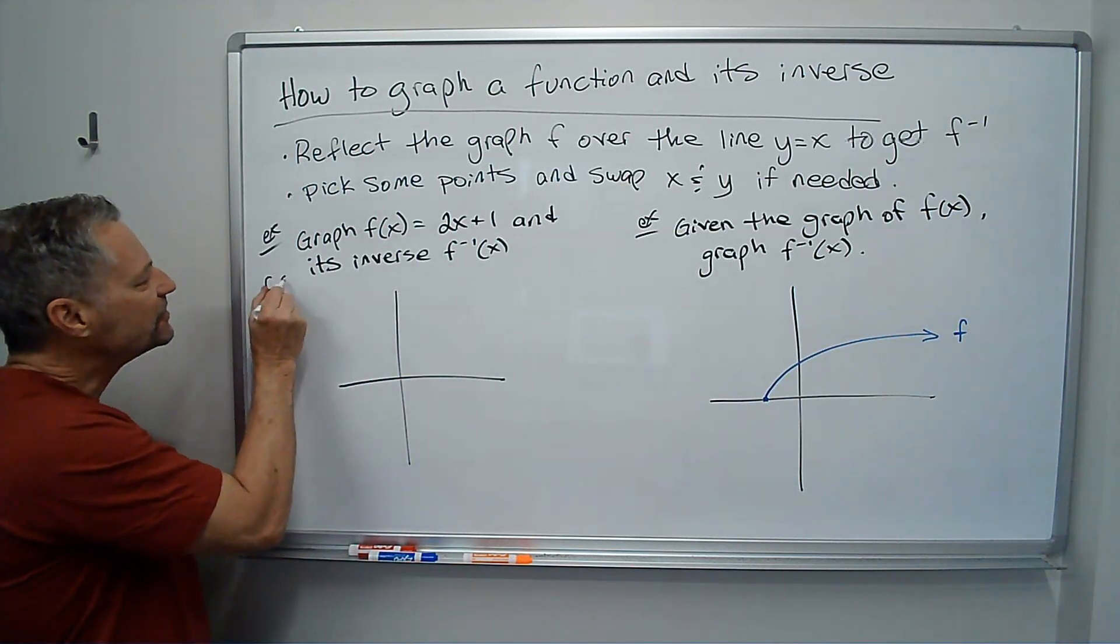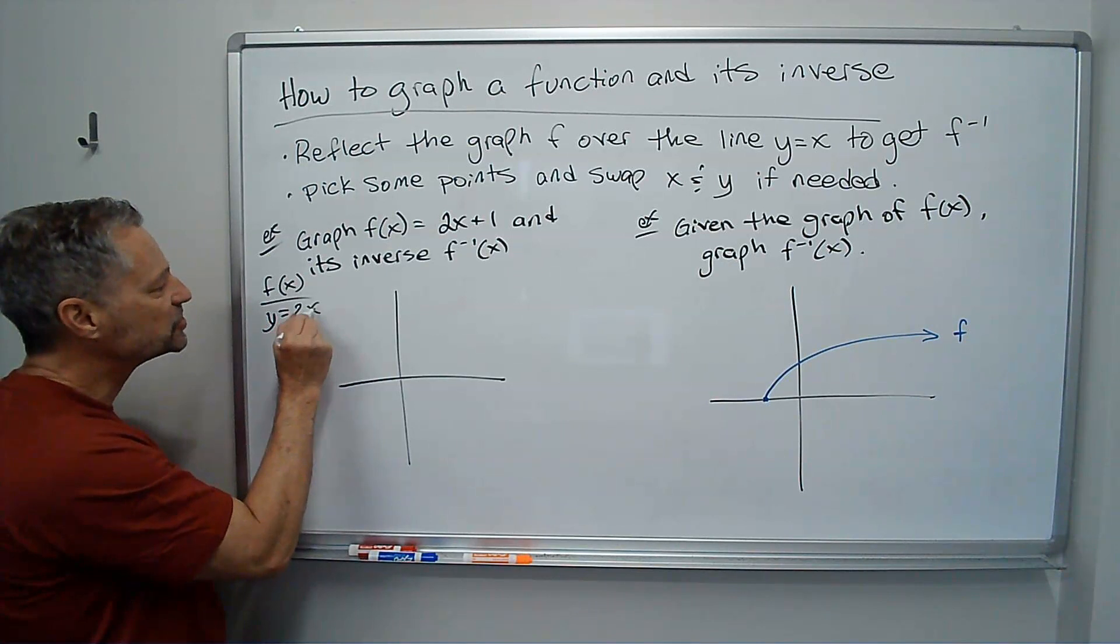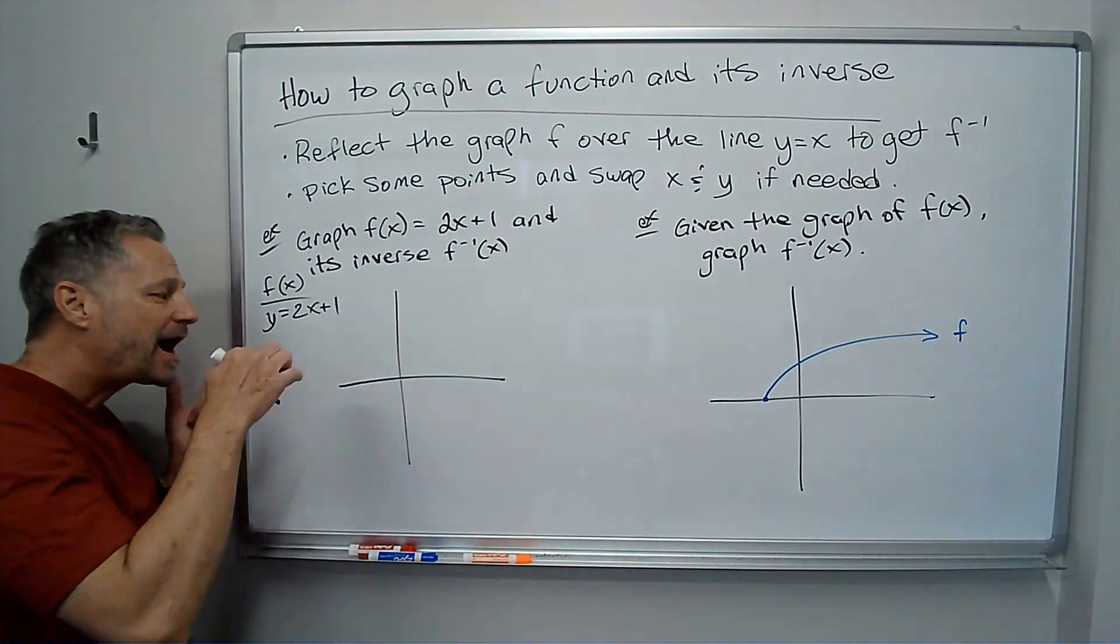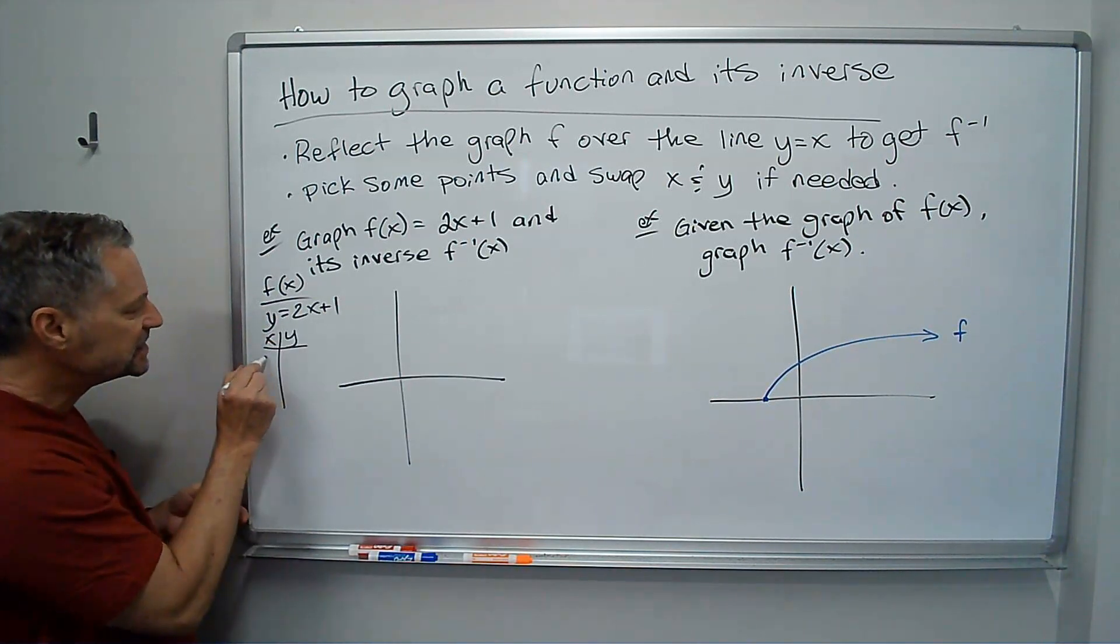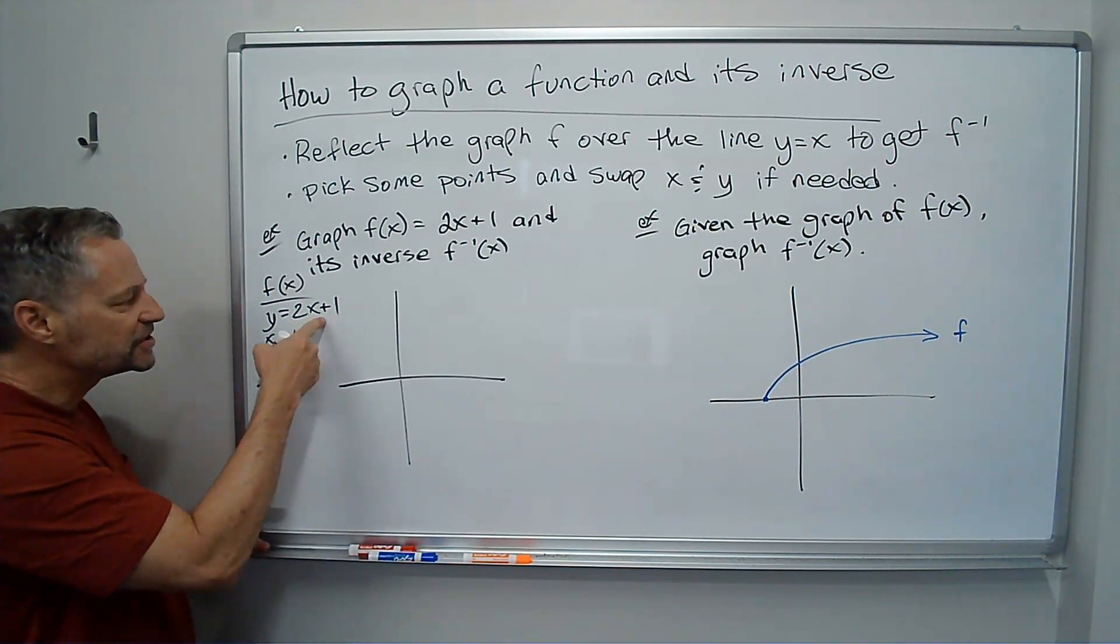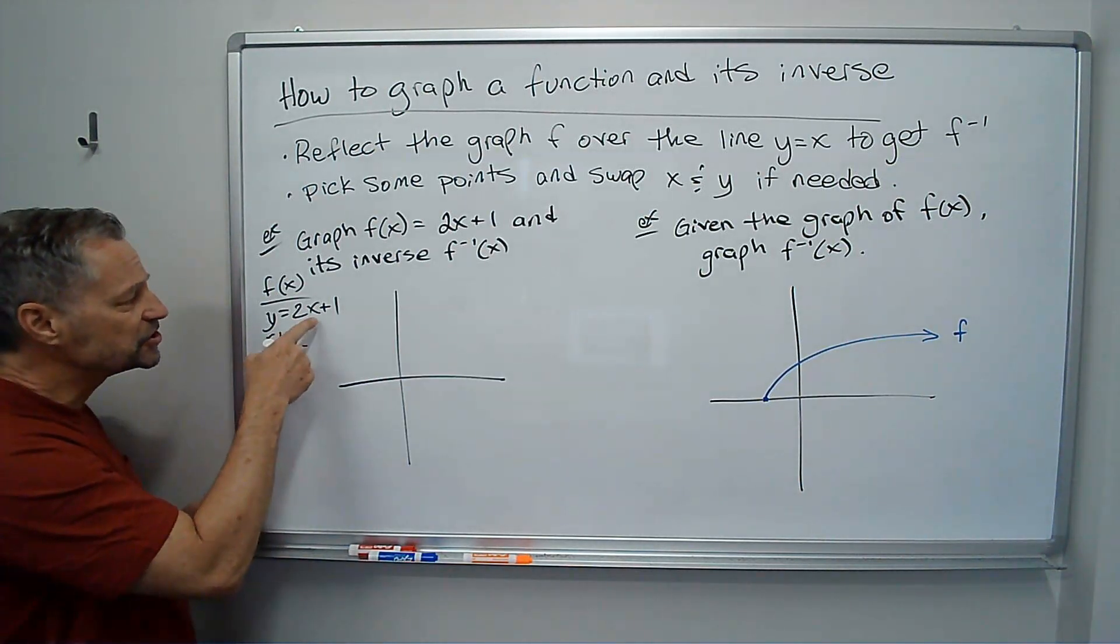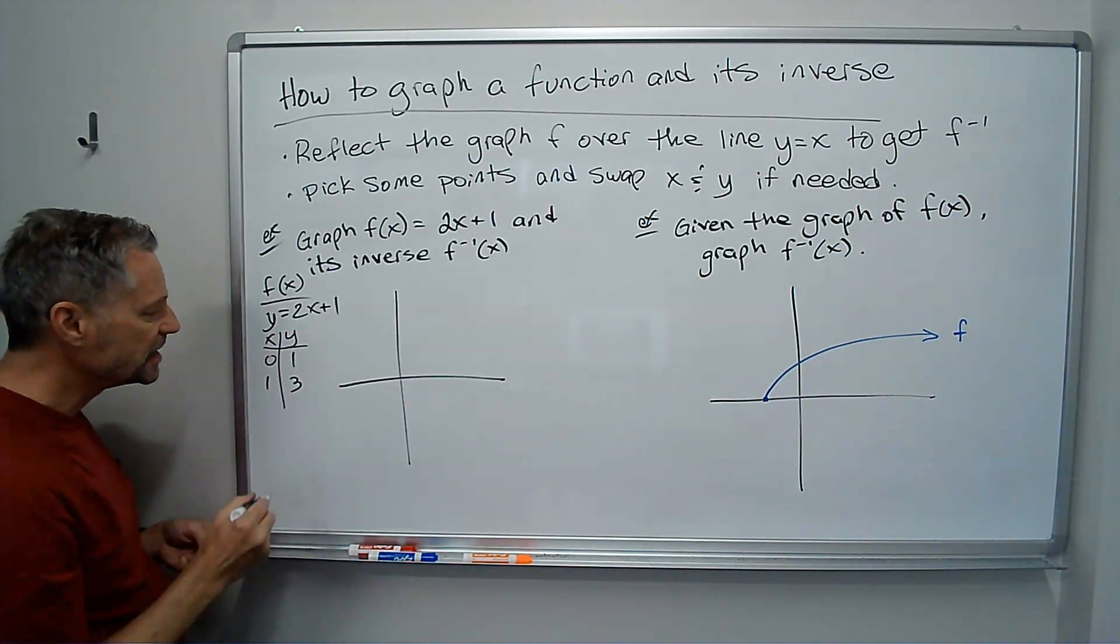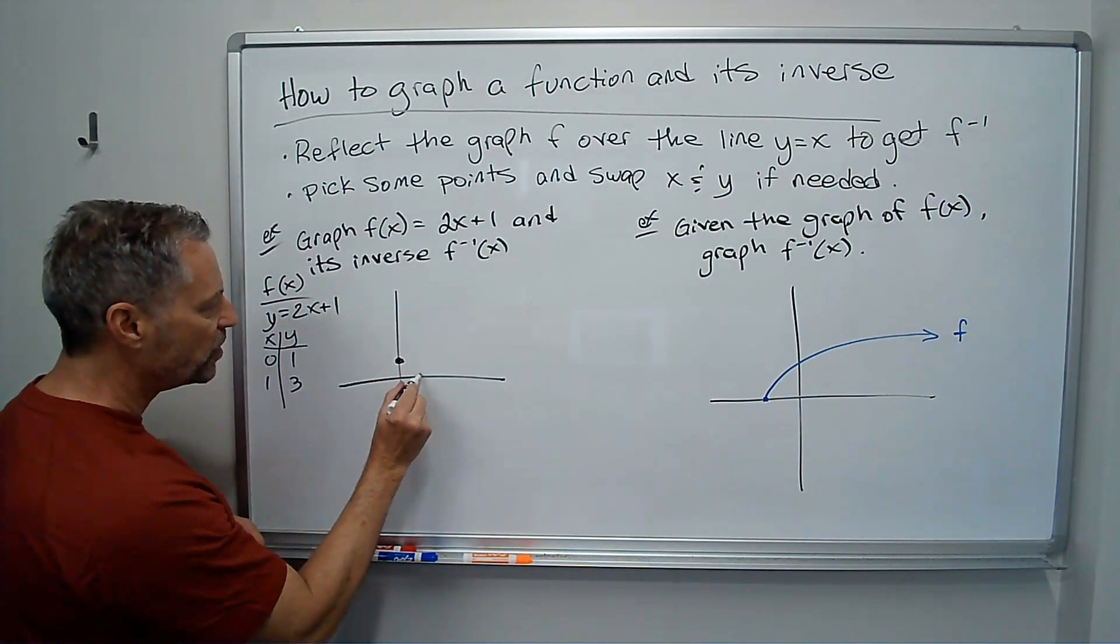Notice the graph of f of x. Well, f of x just means y, so if I'm thinking y equals 2x plus 1, I can graph that line. Let's just plot a couple points. If x equals 0, 2 times 0 is 0, plus 1 is 1, y equals 1. If x is 1, 2 times 1 is 2, plus 1 is 3, y equals 3. So I've got the point 0, 1, and I've got the point 1, 3.